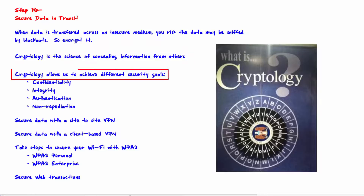Cryptology allows us to achieve different security goals: confidentiality, integrity, authentication, and non-repudiation. Confidentiality means keeping the information secret. Integrity means ensuring that the data has not been altered in transit. Authentication means proving identity. Non-repudiation means a party cannot deny that they sent a specific message.